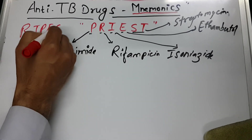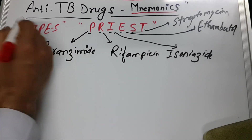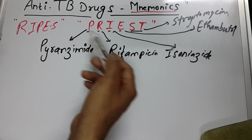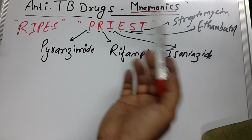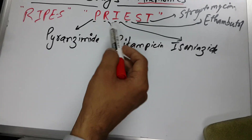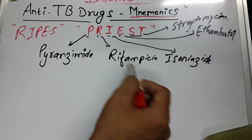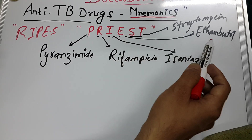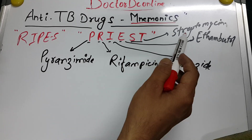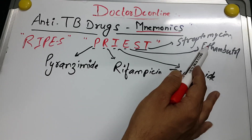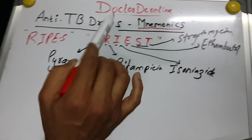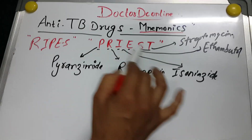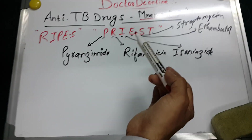You may also use the mnemonic RIPE — whichever is easier for you to remember. But I prefer PRIEST: P for Pyrazinamide, I for Isoniazid, E for Ethambutol, and ST for Streptomycin. These are the first-line drugs.